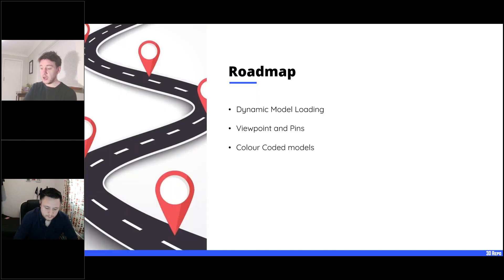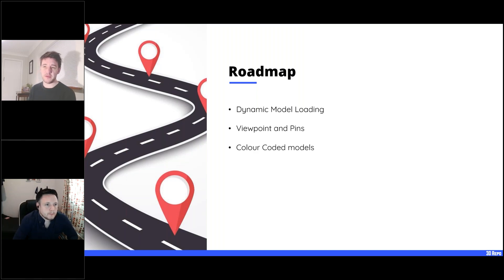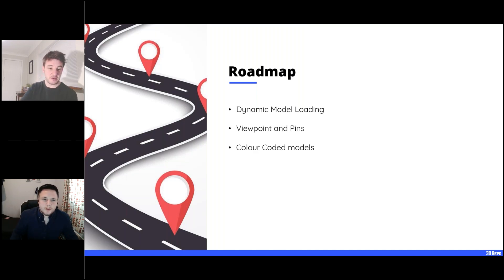Finally, the roadmap — these are months, not years. We want dynamic model loading so the model changes as you select things. We want to pull viewpoints and pins in from the 3D Repo API. We also want to add color-coding so dragging an issue status field into the visual would color-code elements — similar to how we manage groups in 3D Repo. All of our APIs support these features; it's just a matter of wiring them up to the Power BI visual.